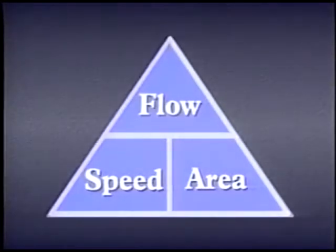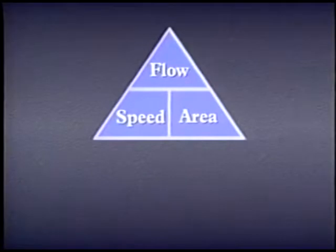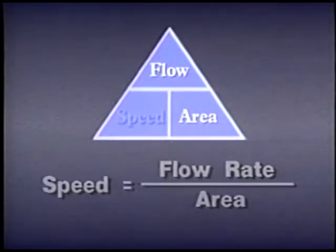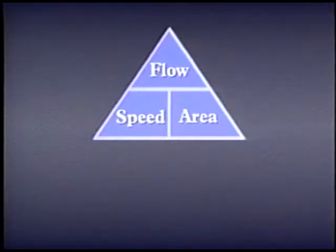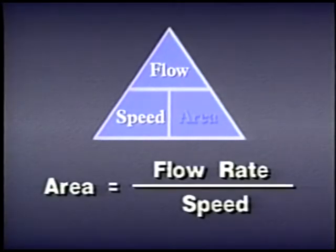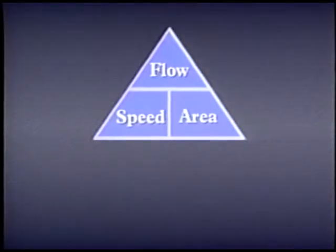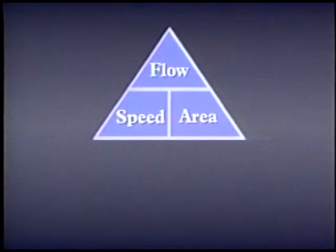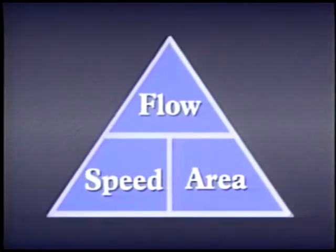We can use the same triangle technique to remember this formula. If we want the formula for speed, we cover speed and see that speed equals flow rate in cubic inches per minute divided by area in square inches. If we need to find what size cylinder achieves a specific speed at a particular flow rate, we cover area and divide flow rate by speed. Or to find what flow rate produces a certain speed, it's speed times area. Remember that flow rate in cubic inches per minute is at the top of the triangle.